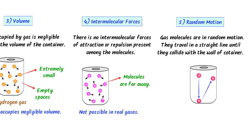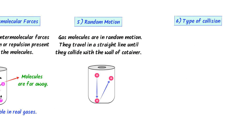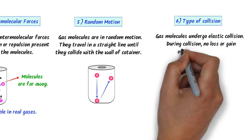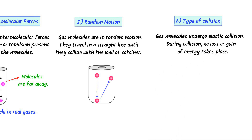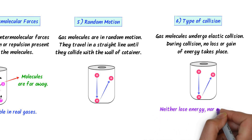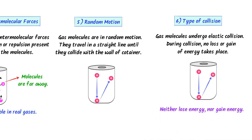The sixth postulate of the Kinetic Molecular Theory of Gases is about the type of collision. It states that gas molecules undergo elastic collisions — meaning that during a collision, no loss or gain of energy takes place. For example, when a molecule collides with the wall of the container, it neither loses its kinetic energy nor gains any energy. So we say that this collision is a perfectly elastic collision.